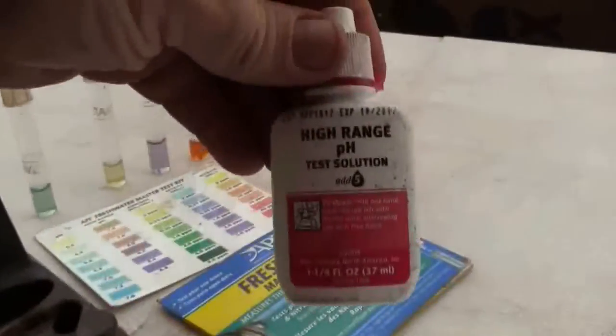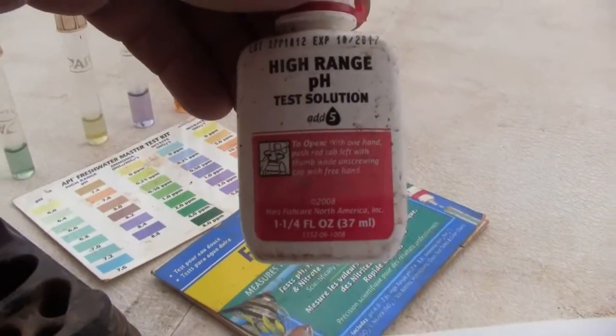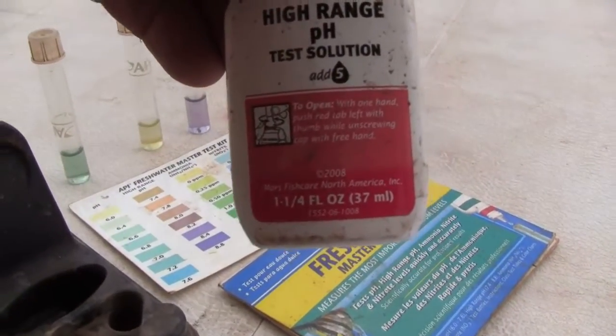On the pH high range, if you need to use that, it says add five drops. So that would be the same as the nitrite test.